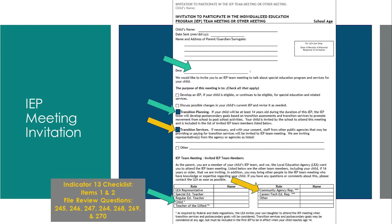The student's signature on the IEP itself will not suffice, so the student's name must be listed on the invitation. Further, because the purpose of this meeting is to begin or continue transition planning, the transition planning box must be checked. For transition-aged students, we must also clearly document agency involvement on the IEP invitation. We need to invite an agency if the agency is likely to provide or pay for transition services, and only with parent permission.